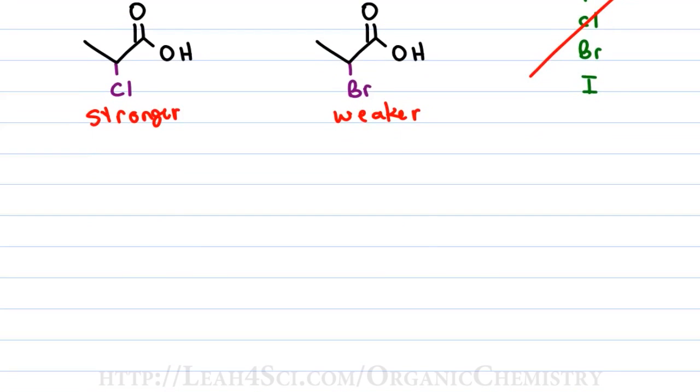The second thing you want to compare is the proximity to the acidic group. If you have an atom capable of influencing the acidity but it's miles and miles away, it's not going to have any effect. Typically you want to look for atoms that are within one to two carbons away from your acid group. So for example if we use the chlorine again, for the first one we put the chlorine on the alpha carbon or one away from the carboxylic acid. For the second one we put it on the beta carbon or two away from the carboxylic acid.